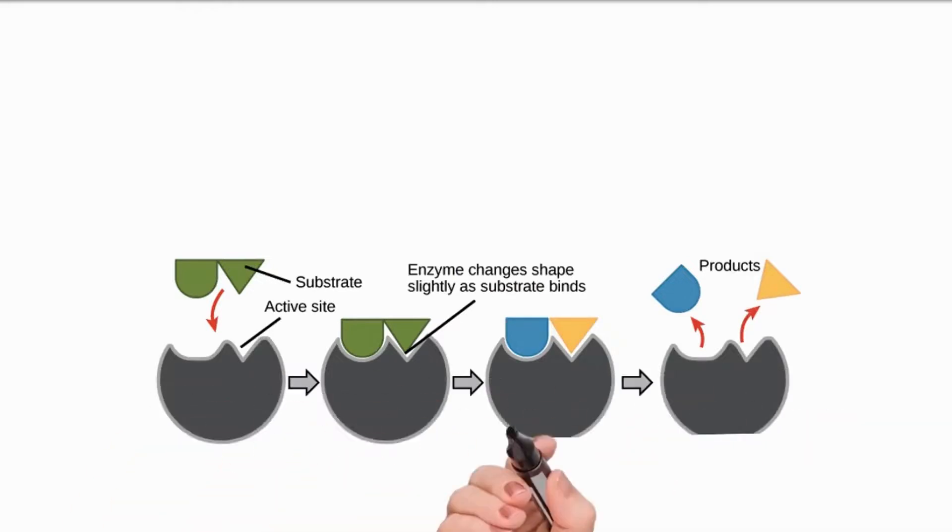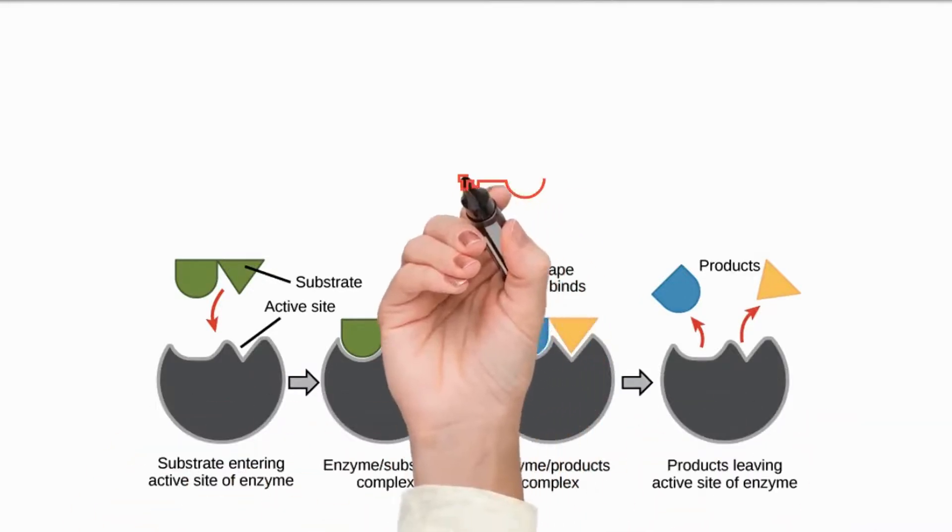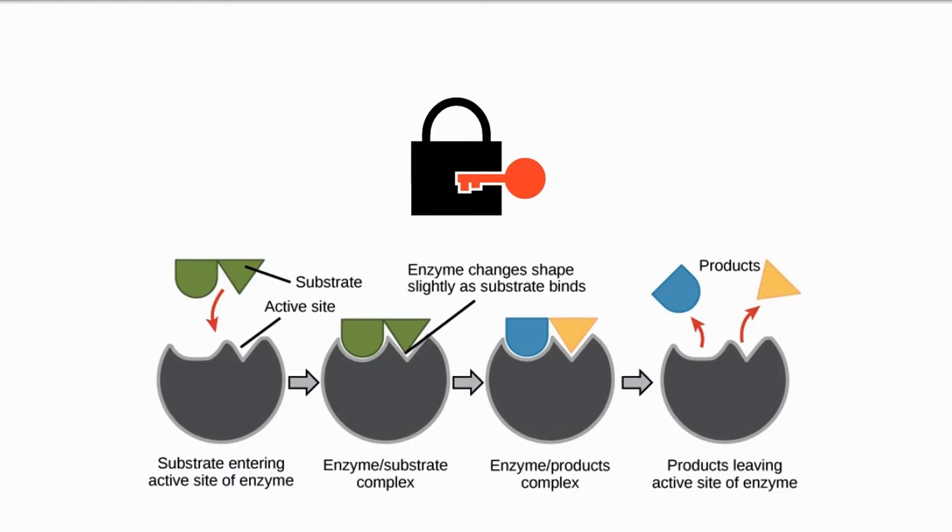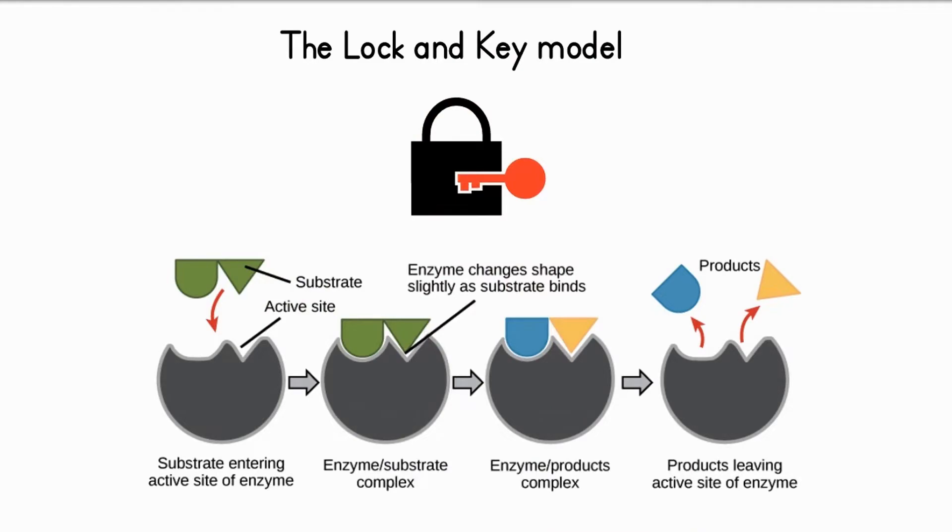The substrate fits into the active site of the enzyme like a key fitting into a lock. Just as a key will only fit one lock, a substrate will only fit into the active site of a particular enzyme. This is known as the lock and key model of enzyme action.